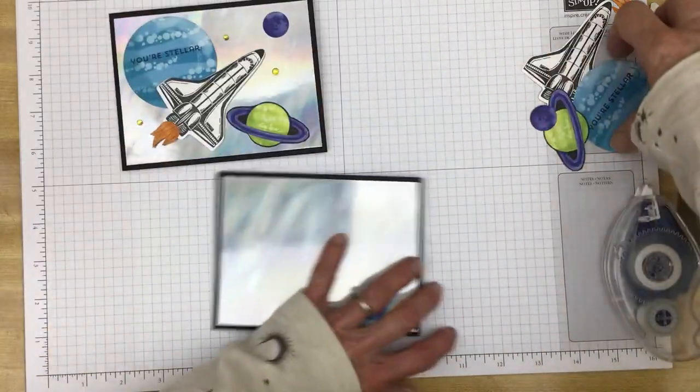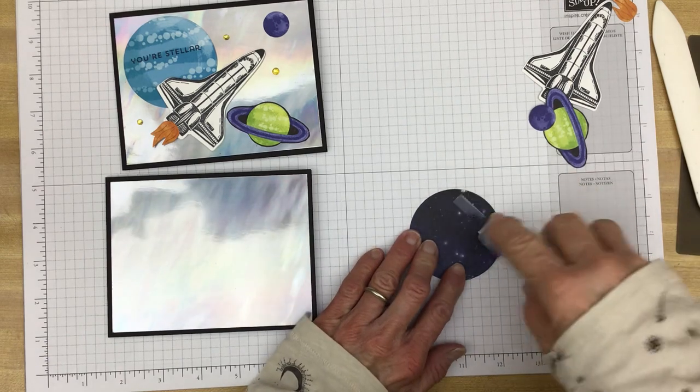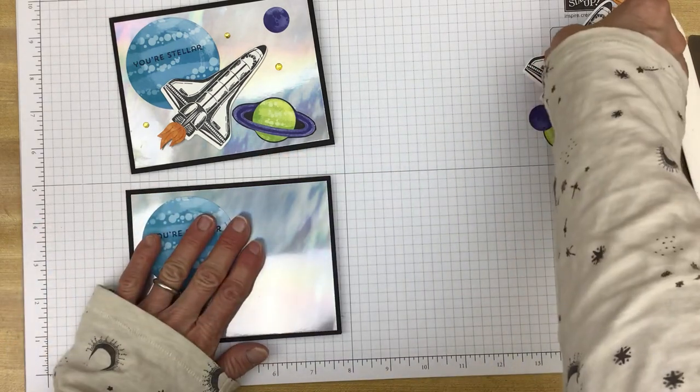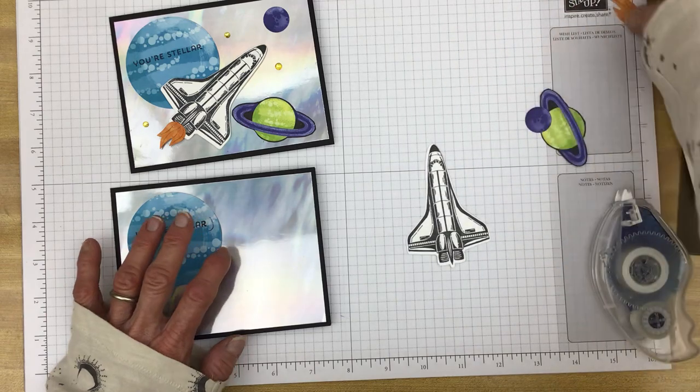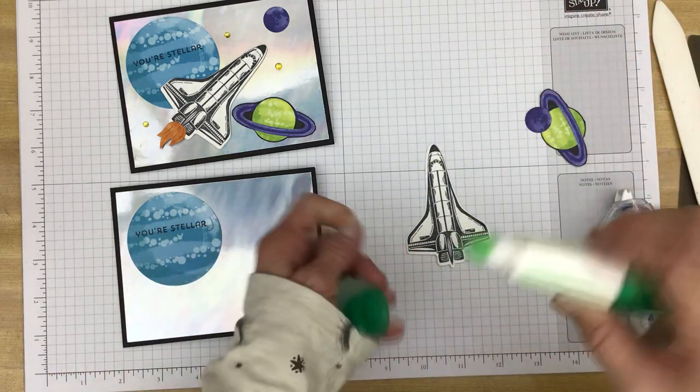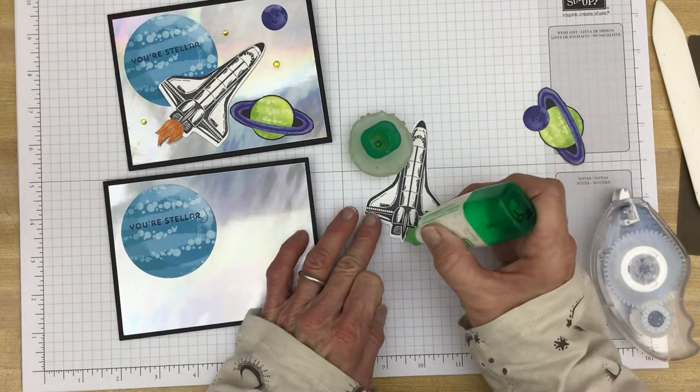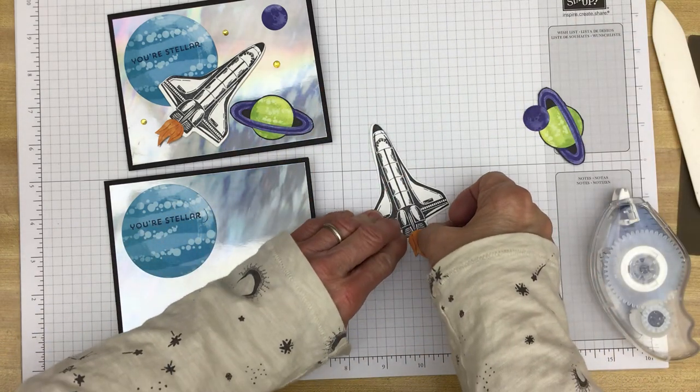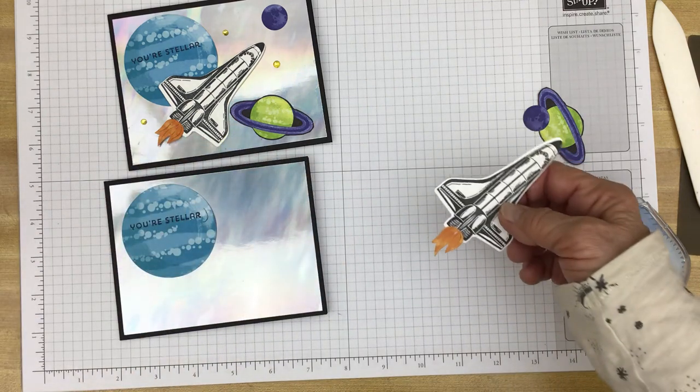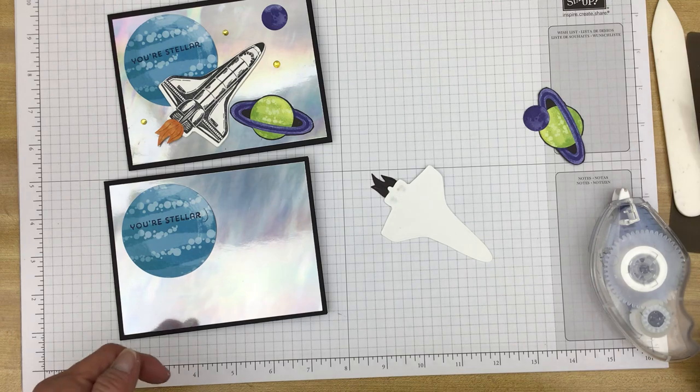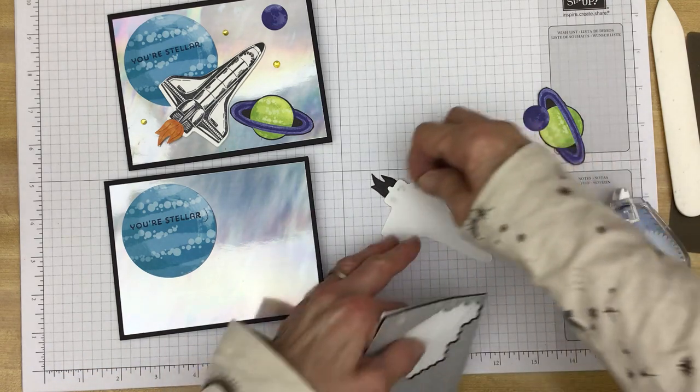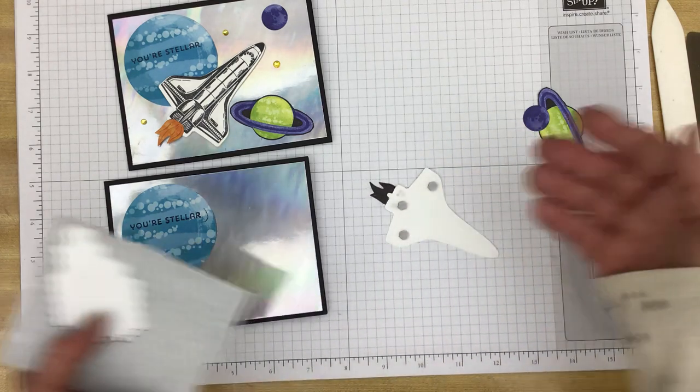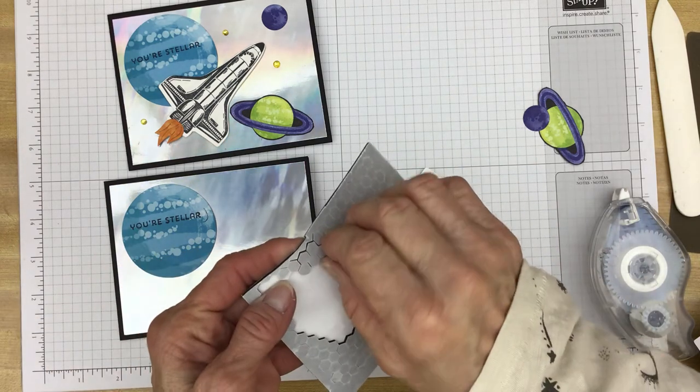So now we'll do the front. We have You're Stellar. And then the space shuttle. And I'm going to put just a dab of liquid glue right here at the bottom of our little spacecraft. I have to tell you something funny. When I showed this stamp set to my husband, I said I just don't understand why there is a space shuttle included. And he said, well, it's a retro set. He said, see, it's from the 80s. There's a space shuttle and there's the MTV astronaut. So, okay. I'll go with that. Sounds good to me.